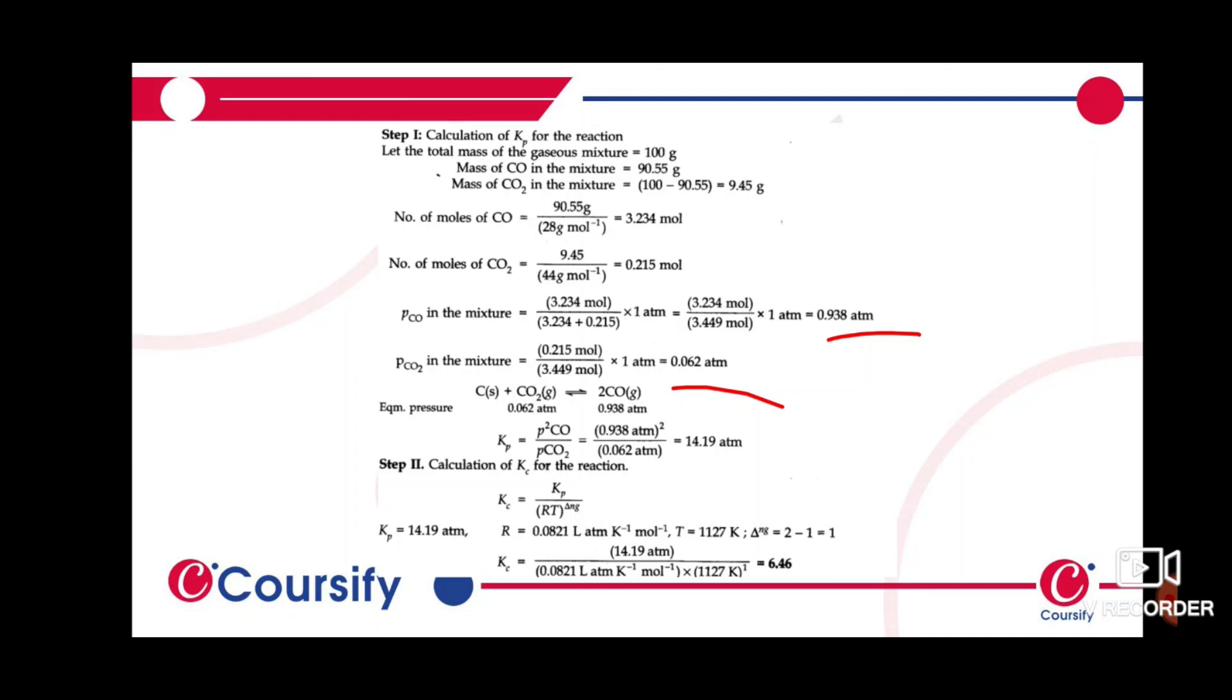After putting in the values, we get 6.466, and the Kp value is 0.153. This is how you use the relationship between Kp and Kc to solve the case.